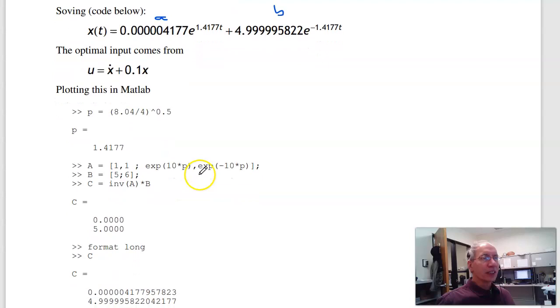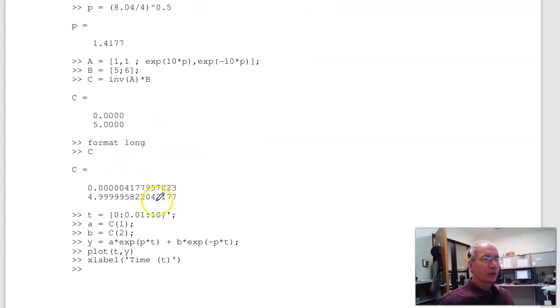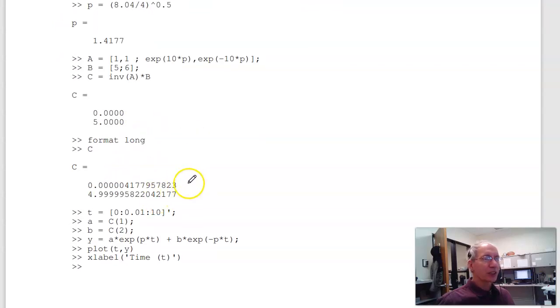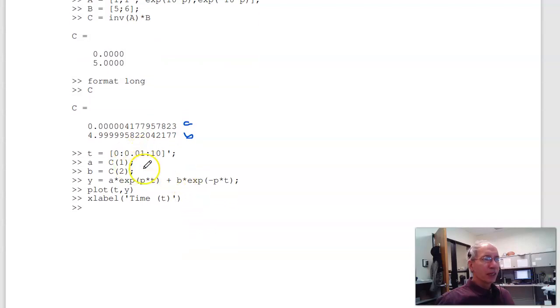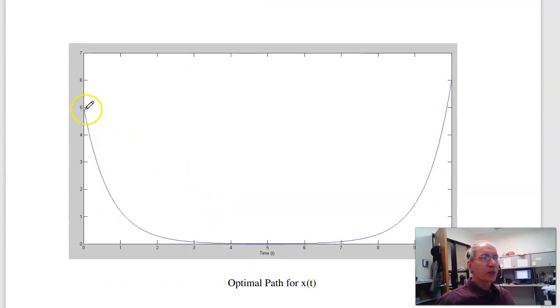Plotting it, just for fun: here's solving for my two unknowns. Give me more decimal points so I can solve. Here's a and there's b. Once I know a and b, here's my path. That's the optimal path going from point A at (0,5) to point B at (10,6), given your dynamics and my cost function.